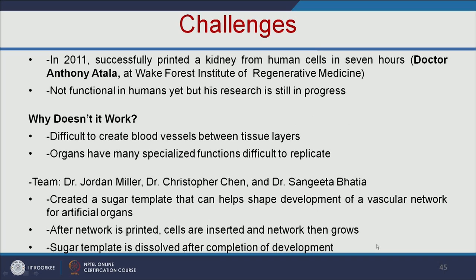One group printed an artificial kidney in 7 hours, but these are not yet functional in humans. The main reason is that it is difficult to create blood vessels between tissue layers, and organs have many specialized functions that are difficult to replicate. This team came up with a new solution — they created a sugar template that can help shape the development of a vascular network for artificial organs. After the network is printed, cells are inserted and the network grows. The sugar template is dissolved after completion of the development.